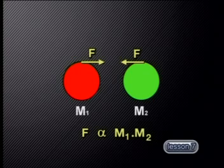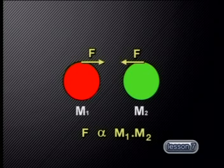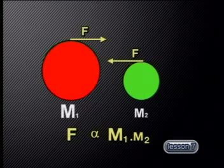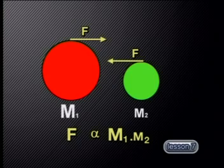Let's continue to unpack Newton's law of universal gravitation. It further says that the force of attraction between particles or objects is directly proportional to the product of the masses of the particles or objects. This means that the greater the mass of an object is, the greater its force of gravity will be.